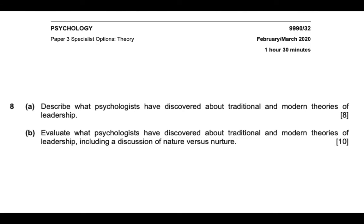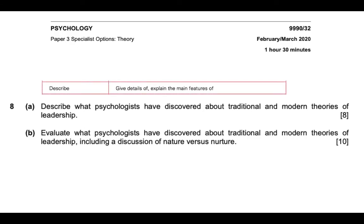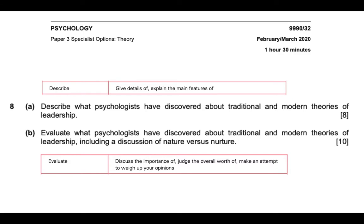The first question is: describe what psychologists have discovered about traditional and modern theories of leadership. The keyword 'describe' means to give details and explain the main features. The keywords here are 'traditional and modern.' The second question is: evaluate what psychologists have discovered about traditional and modern theories of leadership, including a discussion of nature versus nurture. 'Evaluate' means to discuss the importance of, judge the overall worth, and weigh up your opinions. Keep these two questions in mind as we focus on traditional and modern theories of leadership.